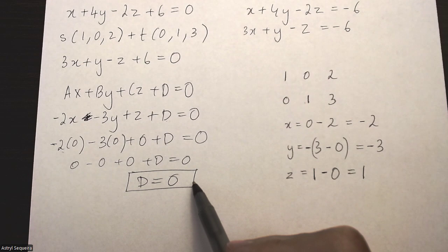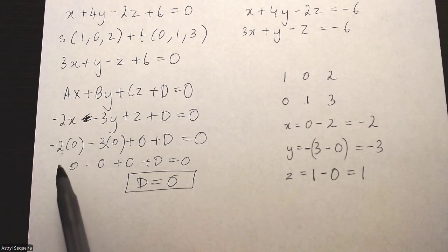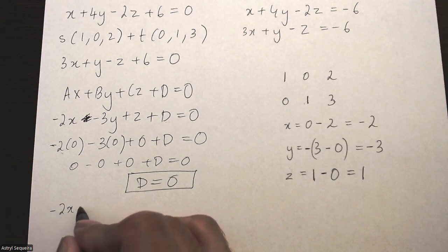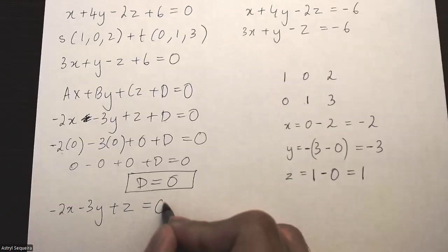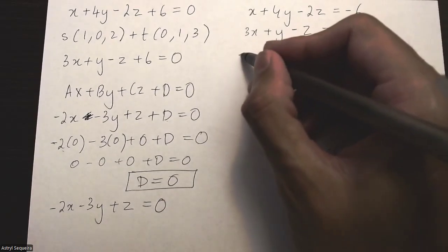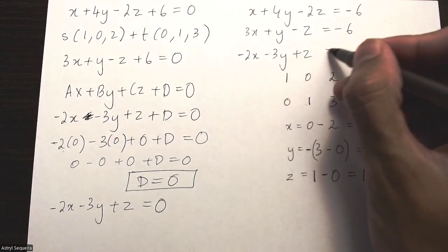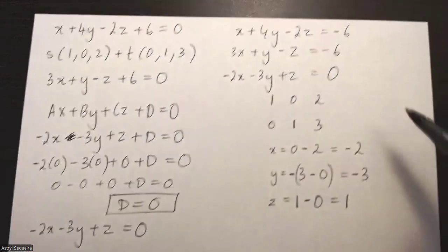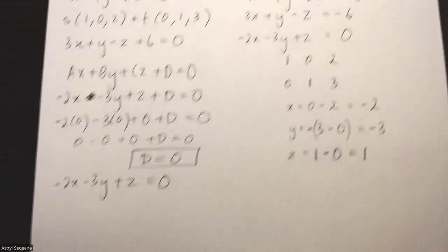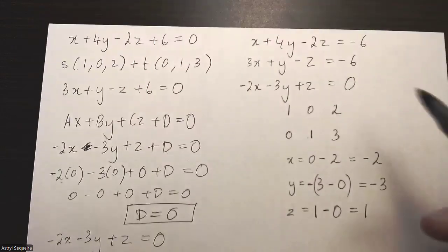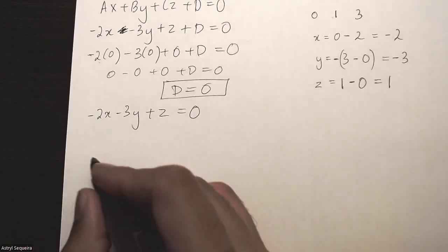So now that I've found my d value, I can rewrite my equation just as negative 2x minus 3y plus z equals 0. I'll put that down over here. We have all three planes together. And now what I'm going to do is I'm going to put this in a 3 by 3 matrix. I'm going to solve that matrix to basically find my solution for the intersection between these three planes.